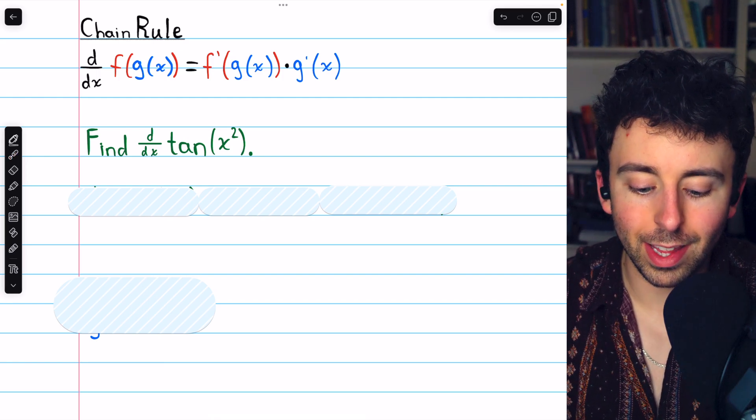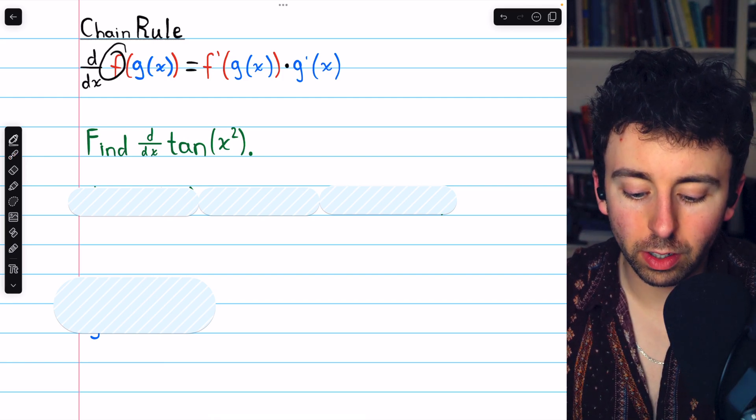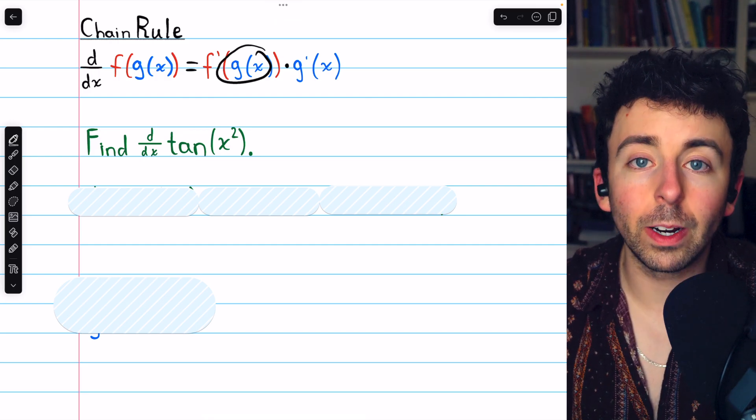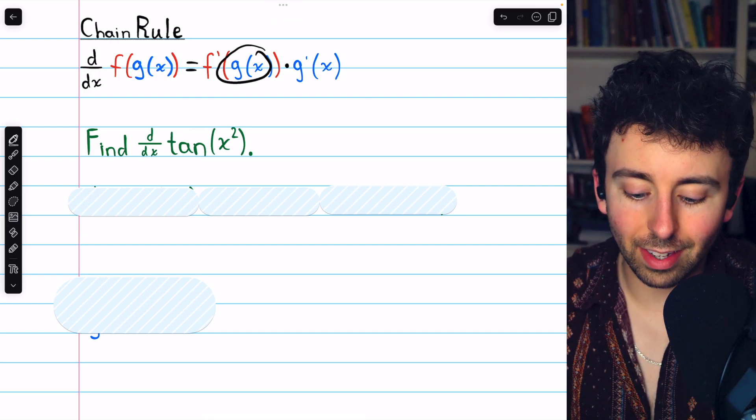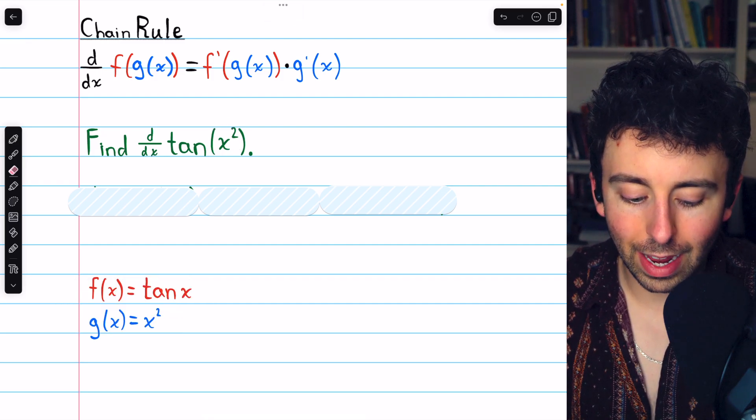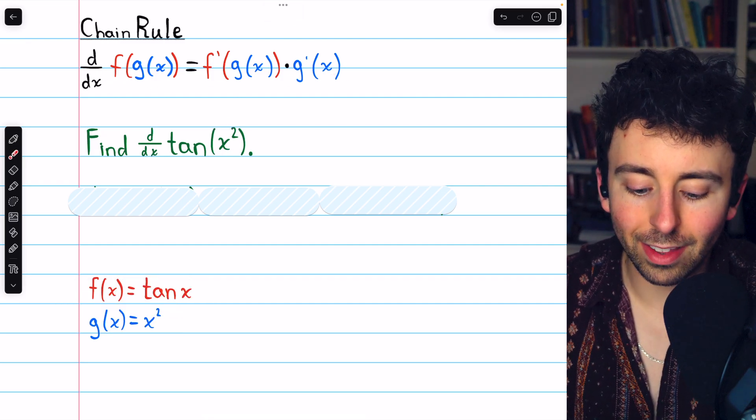So we need to identify the f, our outside function, which in this case is tangent. And we need to identify g, our inside function. What's inside the tangent? Well of course that's x squared. So there's our f and our g, let's go ahead and apply the chain rule.